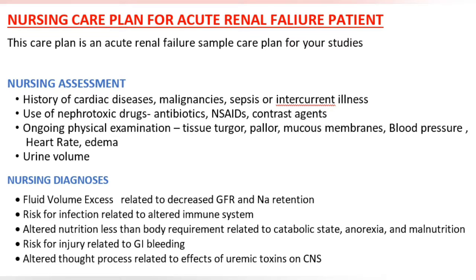Nursing Diagnoses: Fluid volume excess related to decreased GFR and Na+ retention. Risk for infection related to altered immune system. Altered nutrition less than body requirement related to catabolic state, anorexia, and malnutrition. Risk for injury related to GI bleeding. Altered thought process related to effects of uremic toxins on CNS.